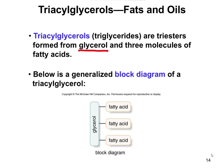If you look at the block diagram, you can see that there are three fatty acids linked to a glycerol, and each of the spots where the arrows are drawn — those are all going to be ester linkages.